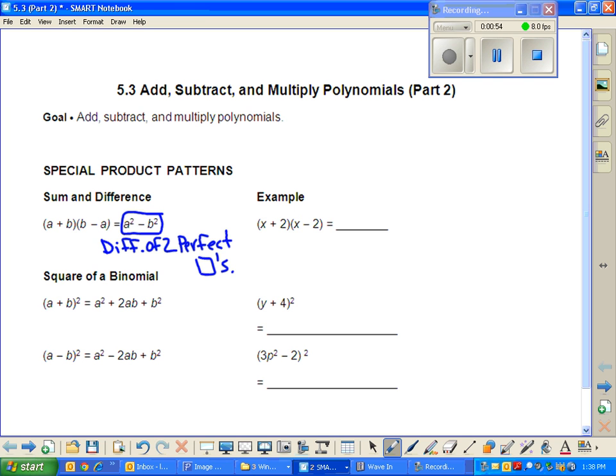That is our special product pattern. If you have something plus something times something minus that same thing, that actually results in a difference of two perfect squares. So instead of foiling this, you could just square the first part, square the last part, and put a minus in between them.